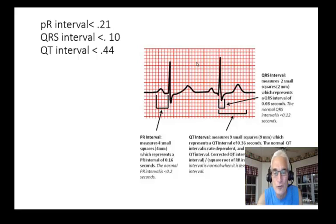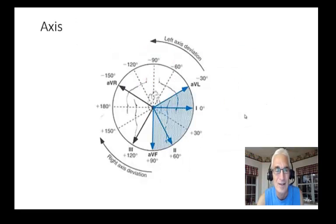Finally, the QT intervals. Look at the QT, that's that lower arrow. Beginning of the Q to the end of the T. Let's count. One, two, three, four, five, six, seven, eight, nine. Nine boxes times 0.04 is 0.36. Normal QT interval. Sweet. You're getting this down, I can tell.